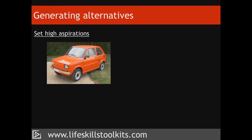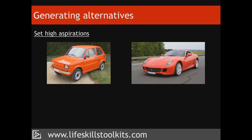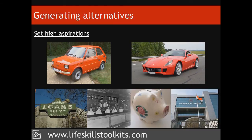Third, set high aspirations. One way of identifying unconventional alternatives is to set yourself high aspirations. Aiming high will force you to see things differently and think outside of the box. For instance, how might the alternatives based on taking a year to save £3,000 for a deposit differ from the alternatives you'd identify if you set yourself a target of six months instead?